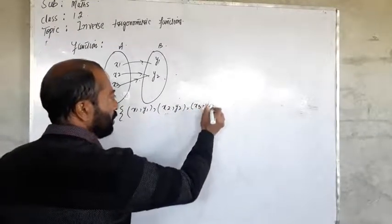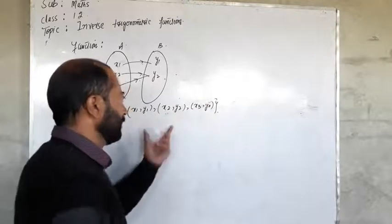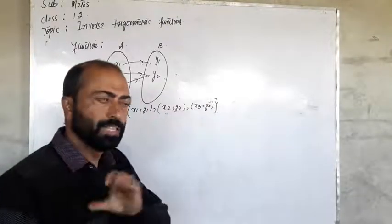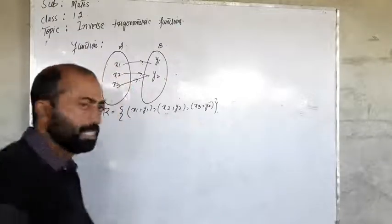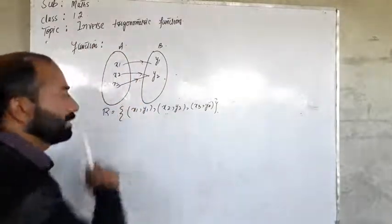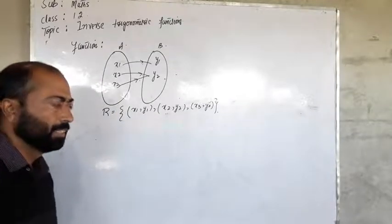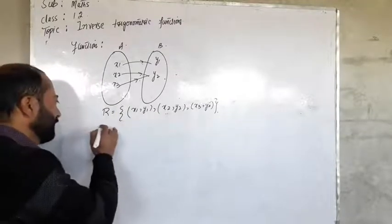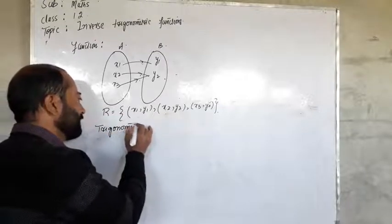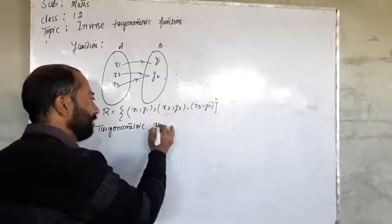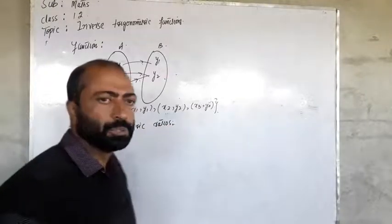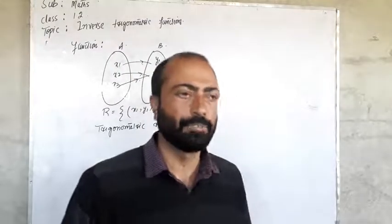Look at the ordered pairs of this relation. None of the two ordered pairs have the same first entry, so clearly we can see that this relation is a function. Actually we are going to discuss inverse trigonometric functions. For this, let me write here the trigonometric ratios. You know that these trigonometric ratios behave like functions — they are trigonometric functions.